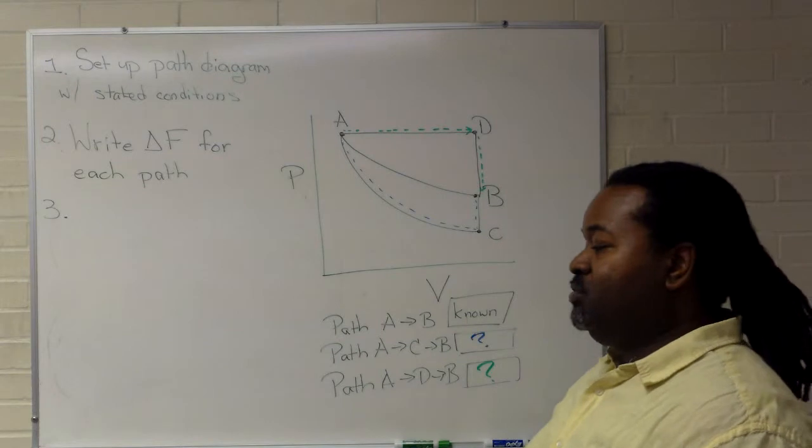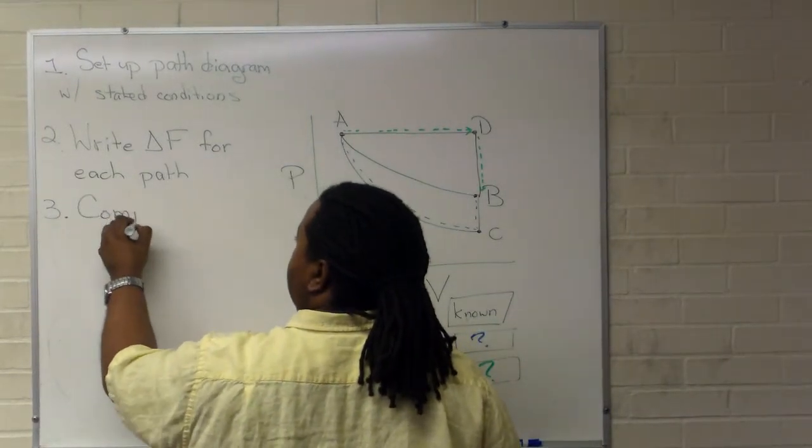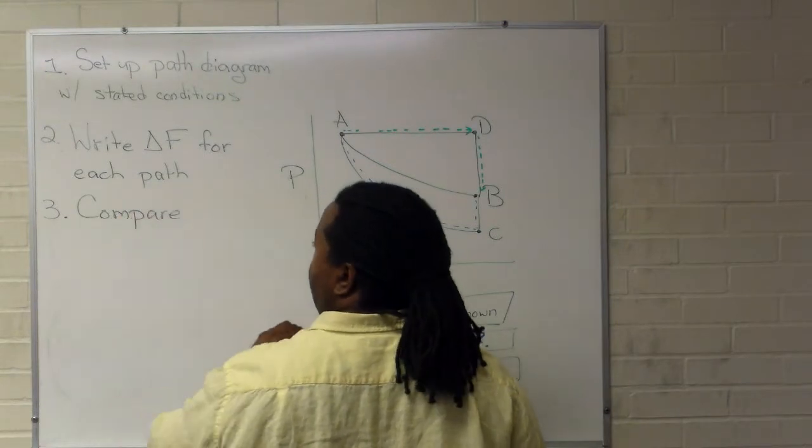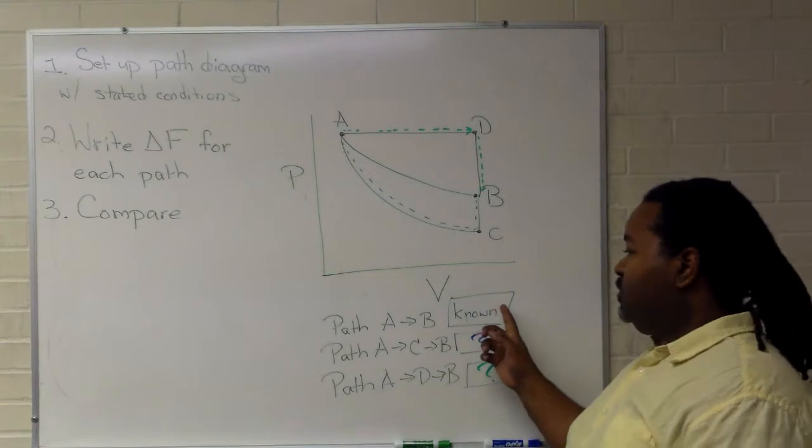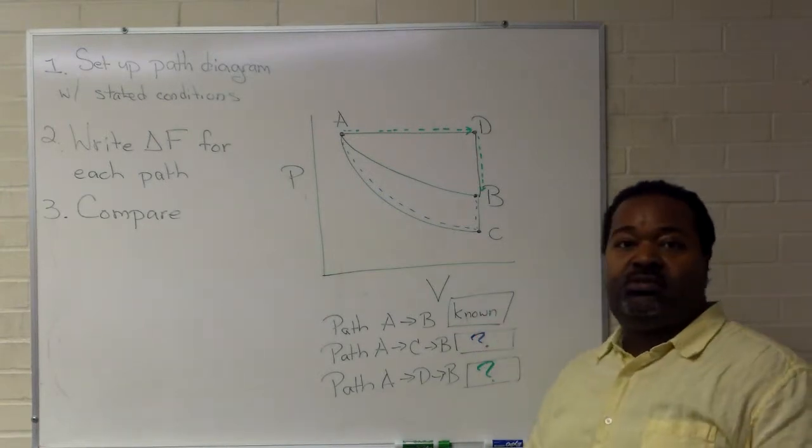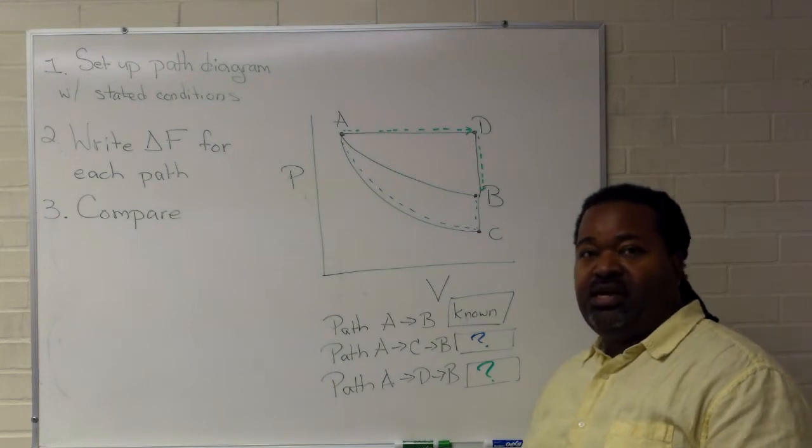And this one is the most straightforward because here you are simply going to compare. If it turns out that the answer here, here, and here are all identical, that means that your function F did not depend on the path.